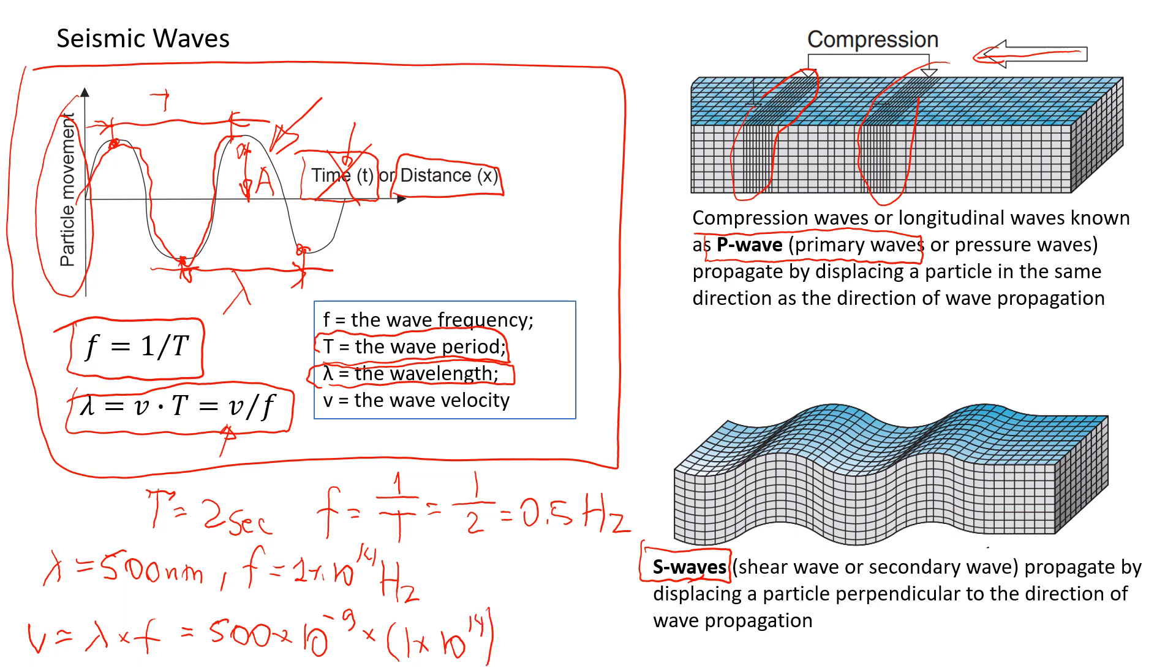And then frequency is 1 times 10 power of 14. So if we do the calculations, it will give us the answer of 5 times 10 to the power of 8 meters per second. So that's how this wave is going to propagate, is going to travel with this speed. Okay, now let's go to the next slide and see what else we have.